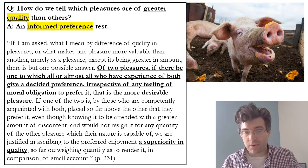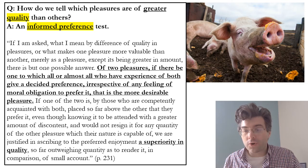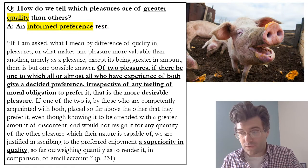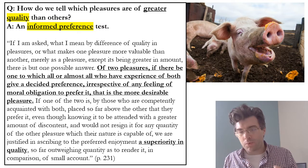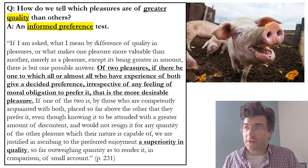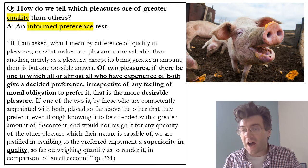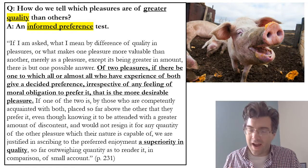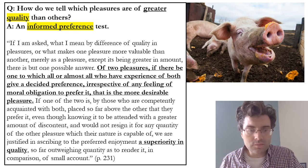Of two pleasures, if there be one to which all or almost all who have experience of both give a decided preference — irrespective of any feeling of moral obligation to prefer it — that is the more desirable pleasure. The reason why he sets the moral obligation issue aside is because he's just trying to come up with a standard for saying whether a pleasure is better or worse than another, without mixing that up with the question of right and wrong. This is just a question about how much happiness would be generated by a given pleasure.